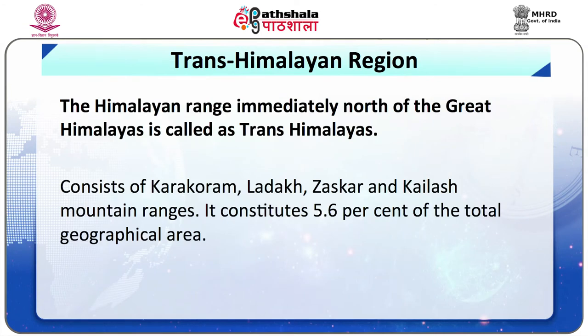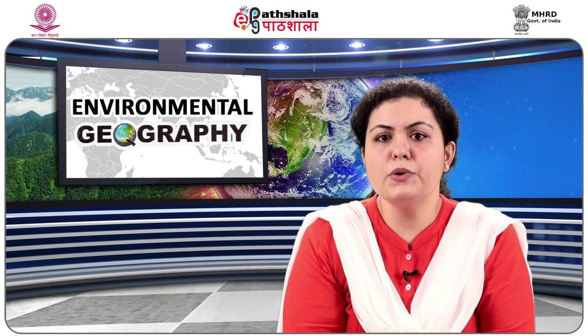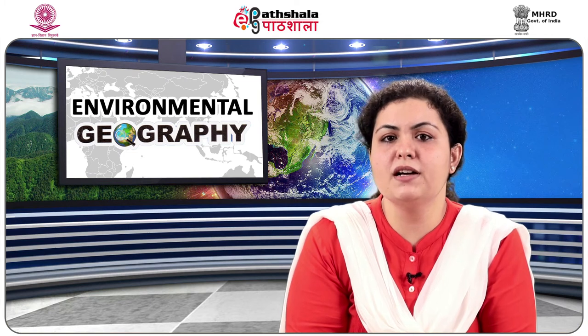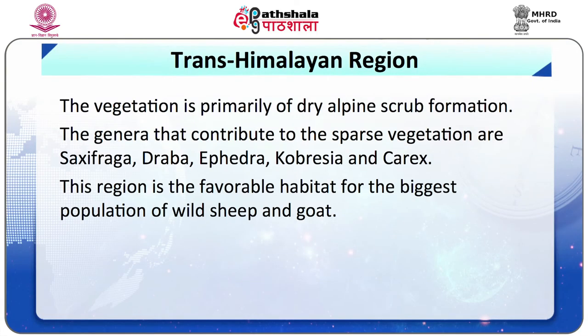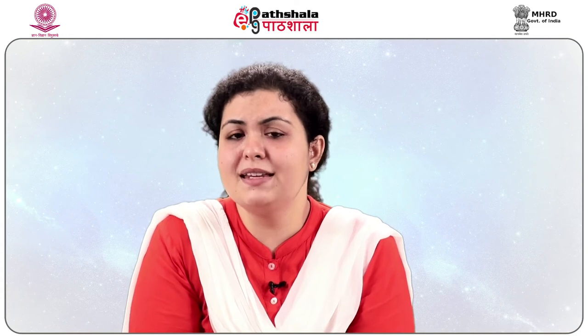The major bioregions of India are as follows. First, the Trans-Himalayan Region. The Himalayan range immediately north of the Great Himalayas is called the Trans-Himalayas. This region is represented by the cold deserts of Ladakh, Jammu and Kashmir, North Sikkim, and Lahaul and Spiti areas of Himachal Pradesh, consisting of the Karakoram, Ladakh, Zaskar and Kailash mountain ranges. It constitutes 5.6% of the total geographical area, estimated to cover 1,86,200 square kilometers. The vegetation is primarily dry alpine scrub formation with genera Saxifraga, Draba, Cobritia and Carex. This region is a favorable habitat for wild sheep, goat, snow leopard, and the migratory black-necked crane, and represents an extremely fragile ecosystem.